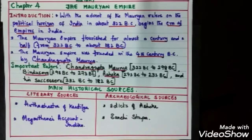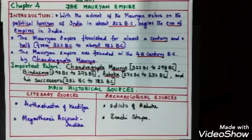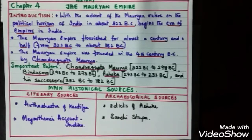The Mauryan Empire flourished for almost a century and a half — 150 years — from 322 BC to about 182 BC. The Mauryan Empire was founded in the fourth century BC by Chandragupta Maurya. Now let us find out who were the important rulers of this dynasty.